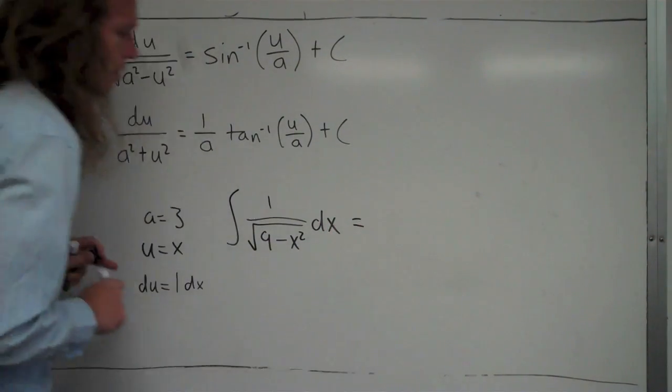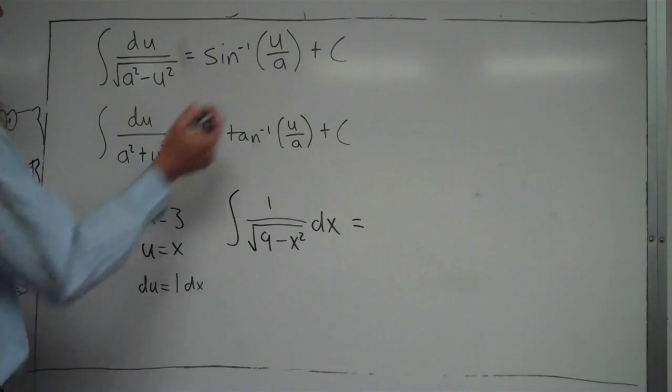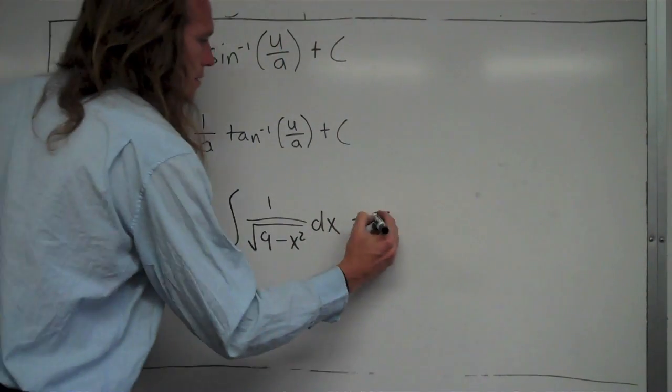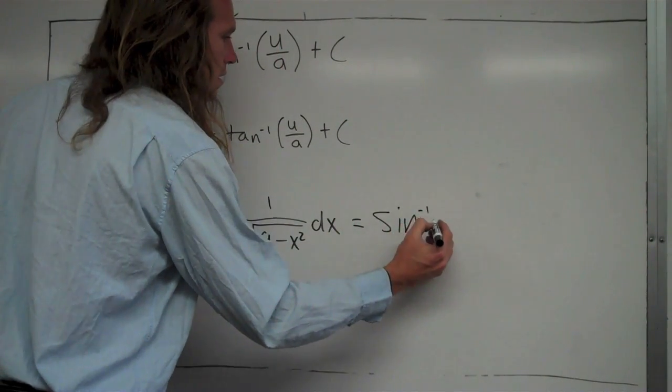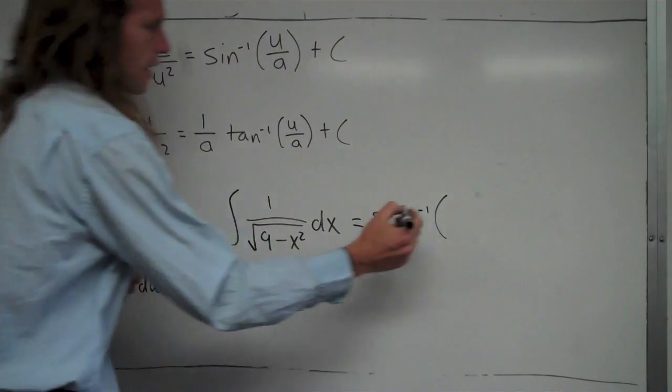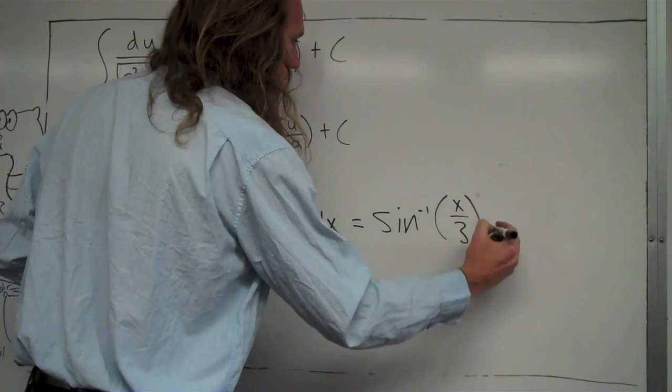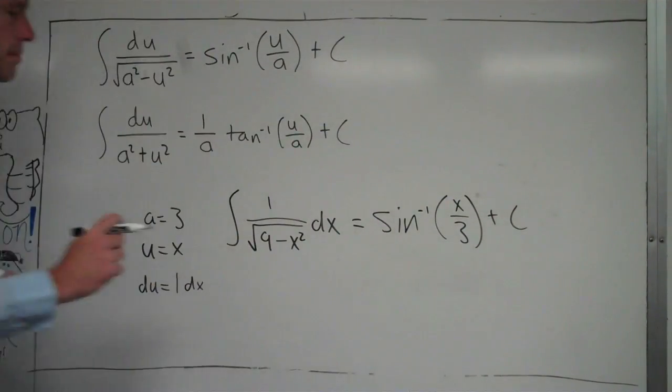we can just plug into our formula. We have inverse sine of u, which is x, over a, which is 3, so it's going to be sin⁻¹(x/3) + C. Don't forget that plus C.